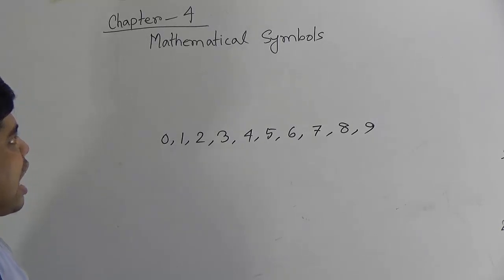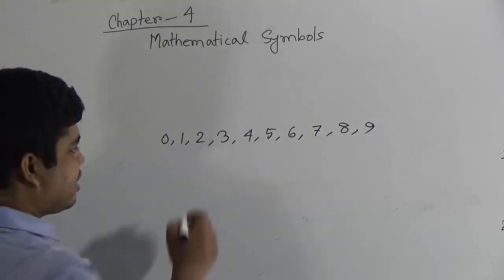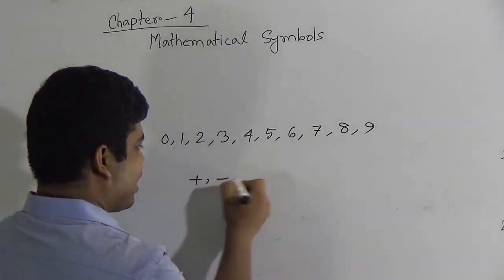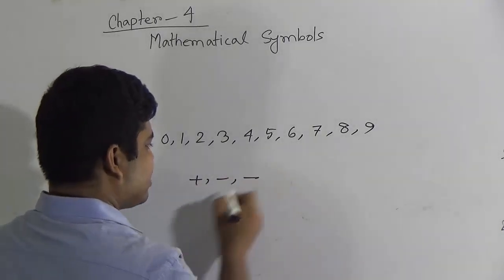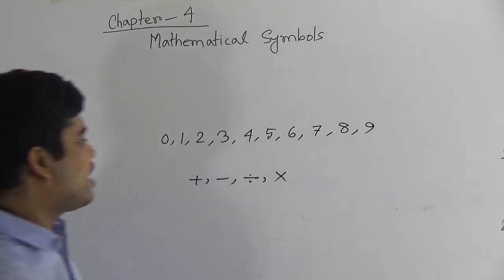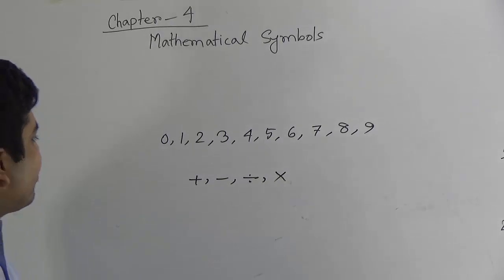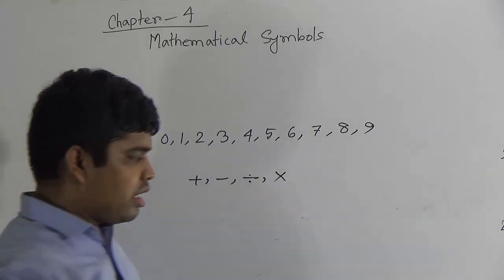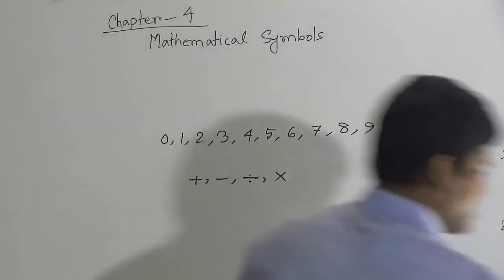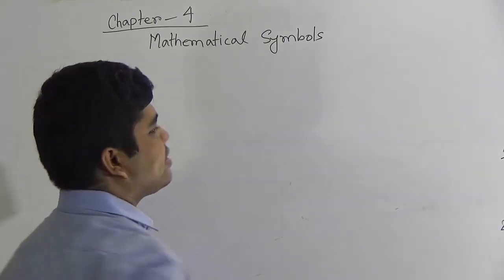Next: how many operational signs are there? There are 4 operational signs. What are they? They are plus, minus, division, and multiplication. That means there are 4 operational signs. Now, dear students, we shall learn 2 types of sentences.